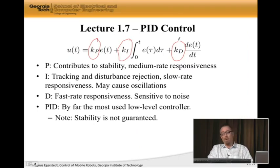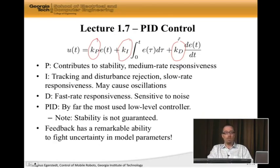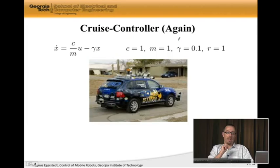However, I want to point out that this is a very useful type of controller. Since it is a feedback law, because it depends on the error, it actually fights uncertainty in model parameters in a remarkable way. Feedback has this remarkable ability to overcome the fact that we don't know gamma, we don't know C, we don't know M. But still, we seem to do well when we design controllers for a wide range of these parameters.